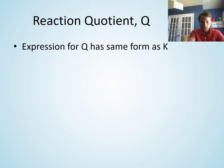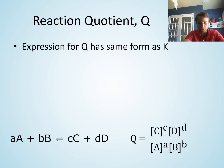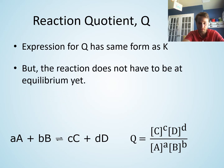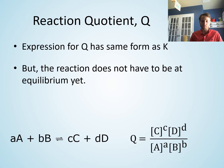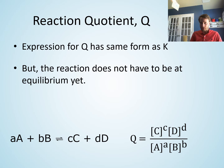Now let's talk about the reaction quotient Q. The expression for Q is the exact same thing as the expression for K. So for a general chemical reaction A + B → C + D with stoichiometric coefficients a, b, c, and d, the reaction quotient Q uses the same expression — concentration of products over reactants raised to their stoichiometric coefficients. The key difference is that for Q we plug in values that are not equilibrium values.